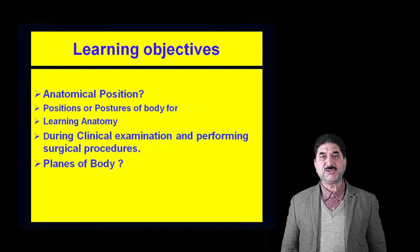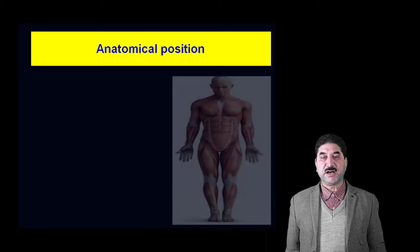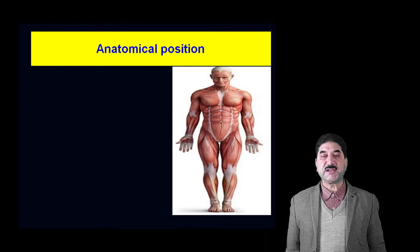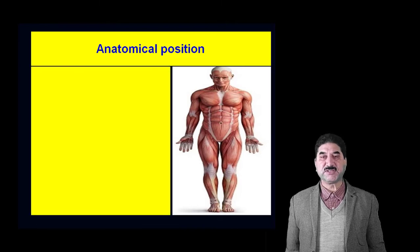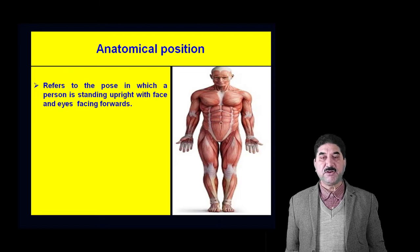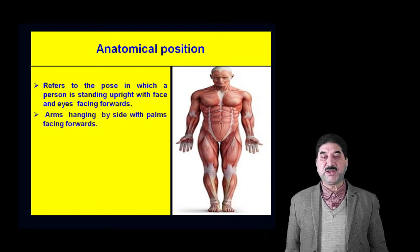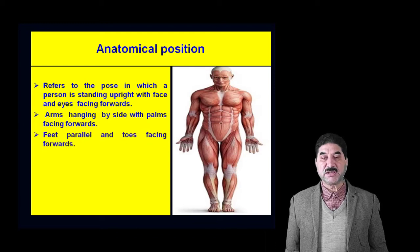What is the anatomical position of a cadaver? It refers to the pose in which a person is standing upright, with face and eyes facing forwards, arms hanging by the side with palms facing forwards, feet parallel and toes facing forwards. The term is used in medicine and related fields when referring to the position of body parts in relation to each other.